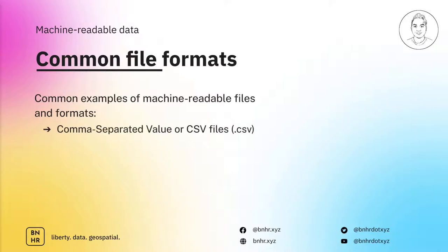Let's take a look at some of these common machine readable data formats. First is the comma separated value or CSV file. Don't be scared if this is your first time hearing about CSVs. They are just essentially text files formatted in a way that allows you to easily store tabular data. More specifically, they are delimited text files whose delimiter — the character used to separate fields or columns of a table — is a comma. Hence the name, comma separated values.